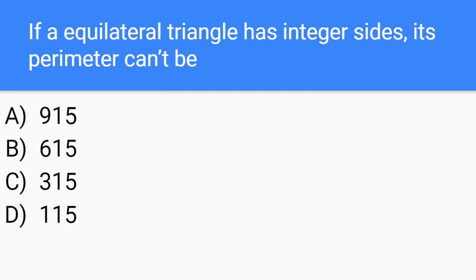The next question is, If an equilateral triangle has integer sides, its perimeter can't be. A, 915. B, 615. C, 315. D, 115.